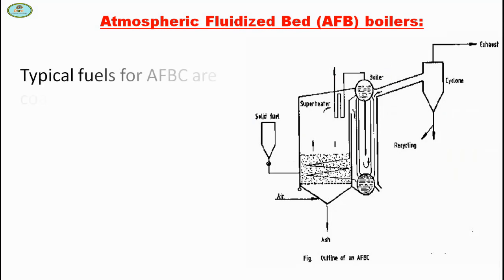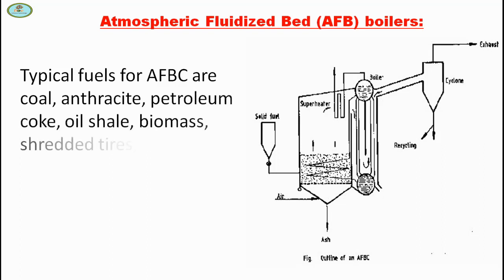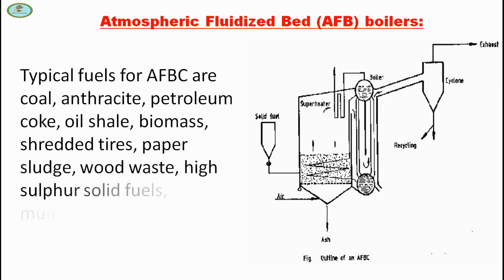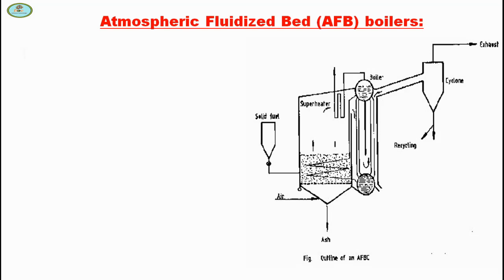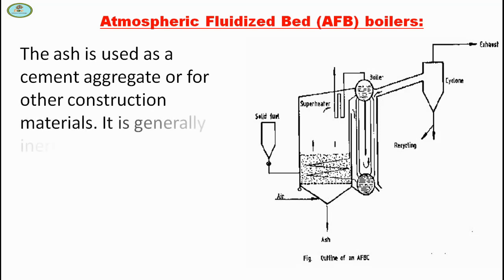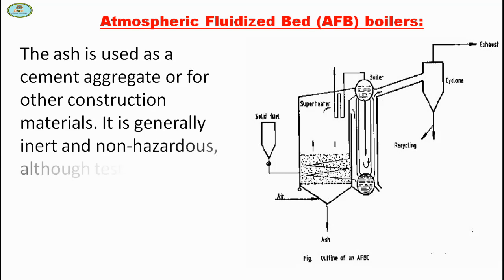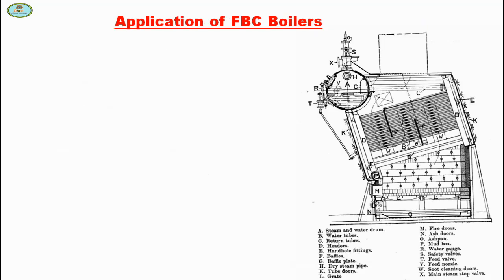Typical fuels for AFBC are coal, anthracite, petroleum coke, oil shale, biomass, used tires, paper sludge, zoo waste, high sulfur solid fuels, and industrial process waste. The ash is used as a cement aggregate or for other construction materials. It is generally inert and non-hazardous, although testing may be performed to detect any possible hazardous residues.